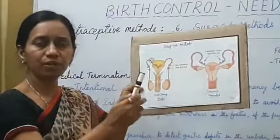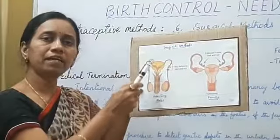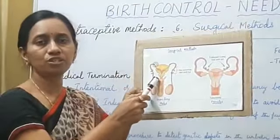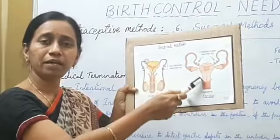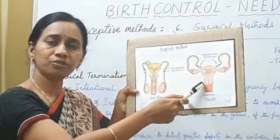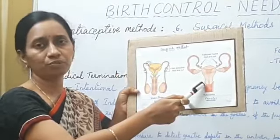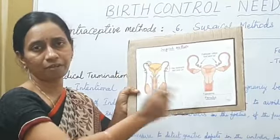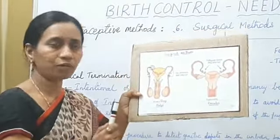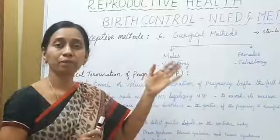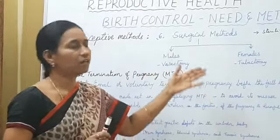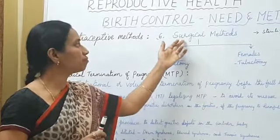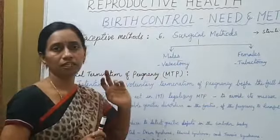These surgical methods are done by making an incision on the scrotum in males, and making an incision on the abdomen through the vagina in females, so that the people may get a permanent prevention by surgical method.